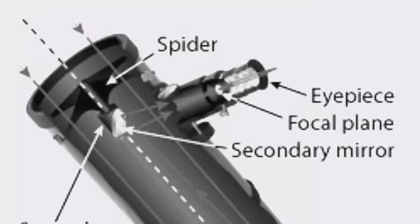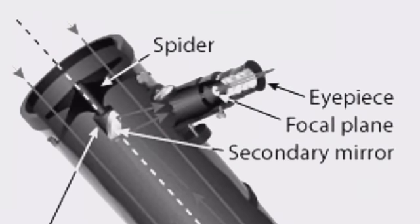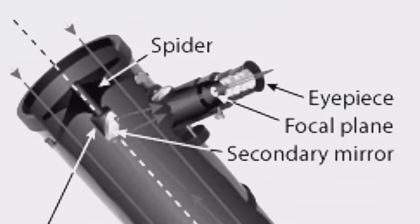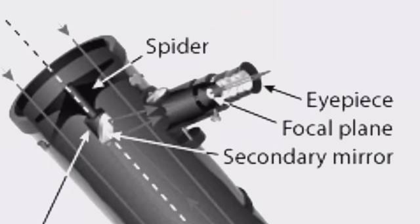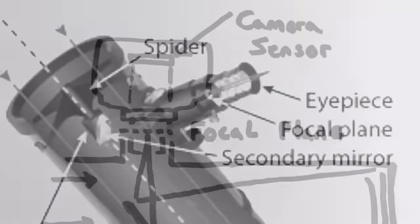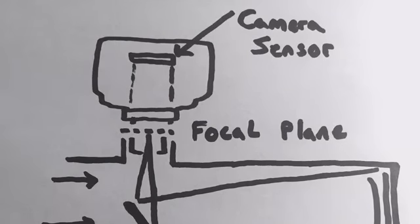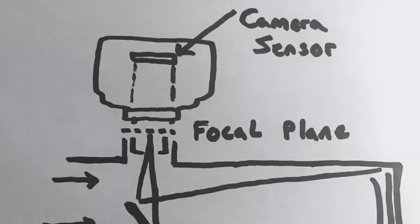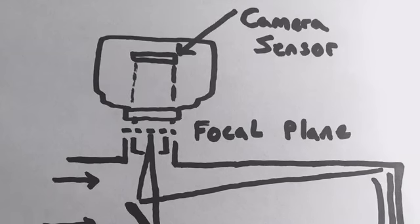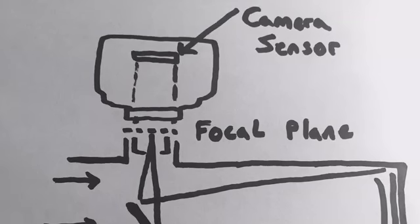Most Newtonian reflectors, especially the budget range, were designed with visual use in mind and not for astrophotography. As you can see, the eyepiece easily reaches the focal plane in this drawing. So in order to achieve sharp focus, the camera sensor has to reach the focal plane. But as you can see in this case, that's not possible because there's not enough inward focus to bring the camera sensor close enough to the focal plane of the telescope.